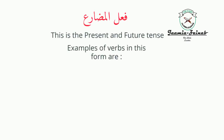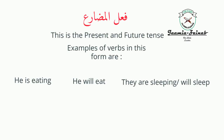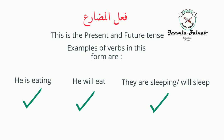Fi'lul mudhori is the present and future tense. Examples of verbs in this form are: he is eating, he will eat, they are sleeping, or they will sleep. We are doing these examples in English because starting with Arabic words would cause confusion.